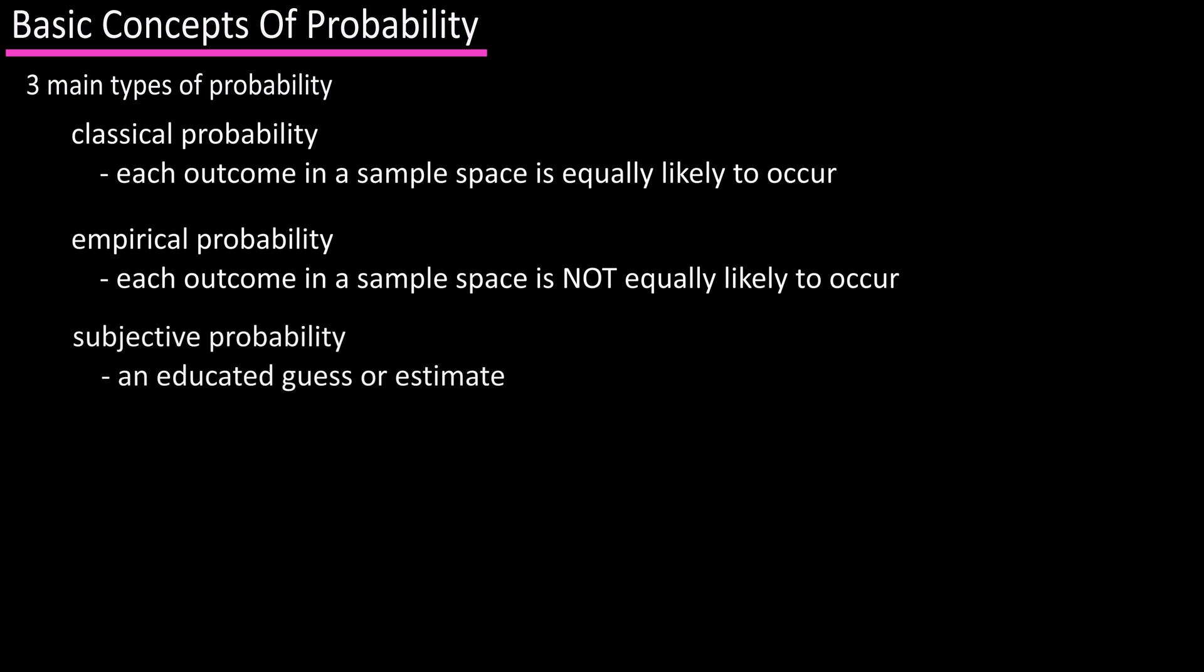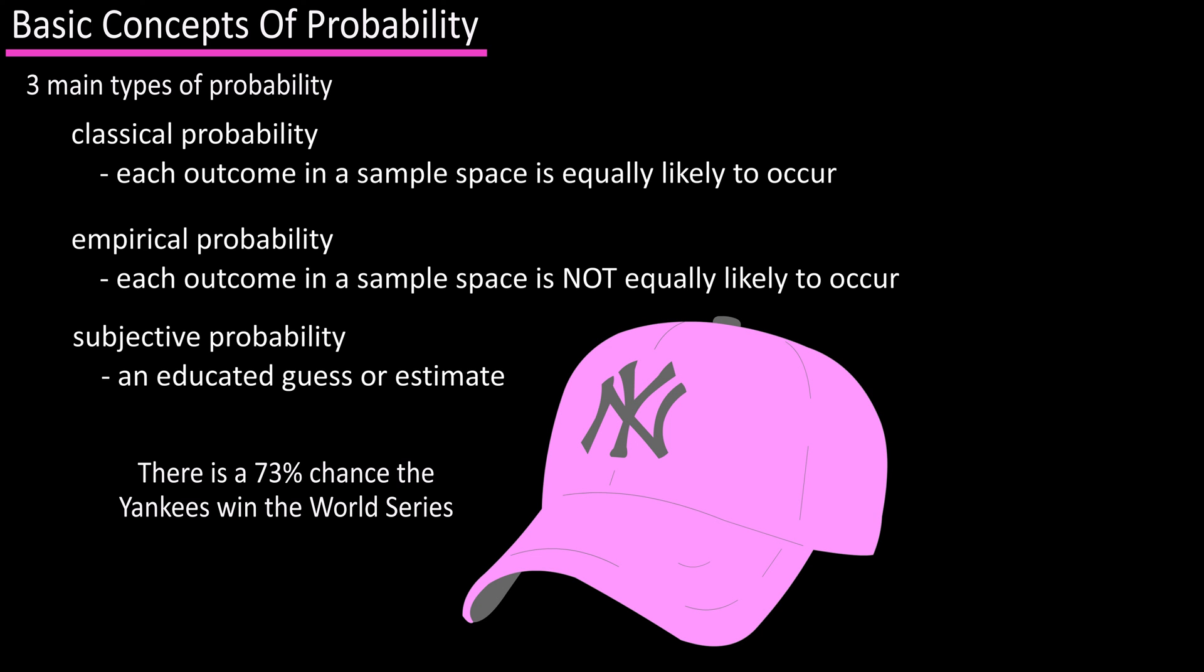Subjective probability is based on an educated guess or an estimate. For instance, if I were to say there was a 73 percent chance the Yankees win the World Series next year, this is based on my experience and evaluation.